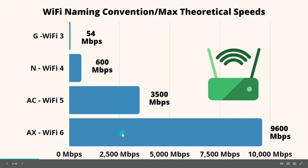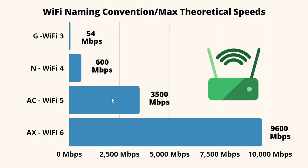Looking at this chart, it's easy to think that Wi-Fi 6 is actually three times faster than Wi-Fi 5, but actually a single stream of Wi-Fi 6 is only about 40% faster than Wi-Fi 5. So, how did we get to this?